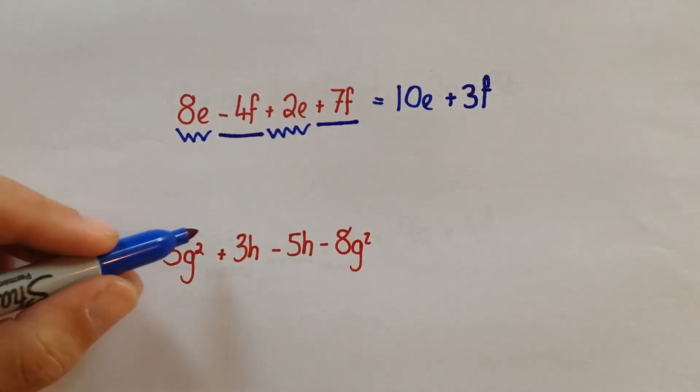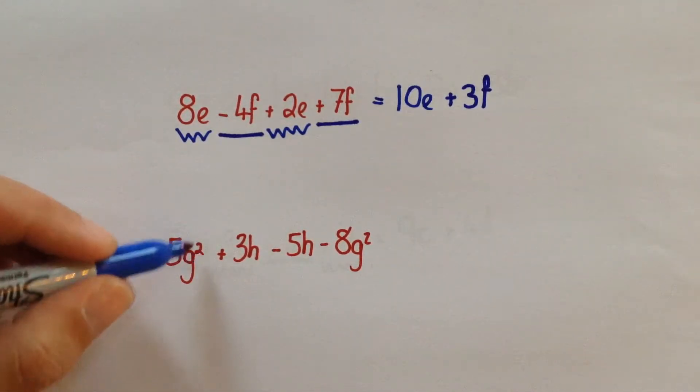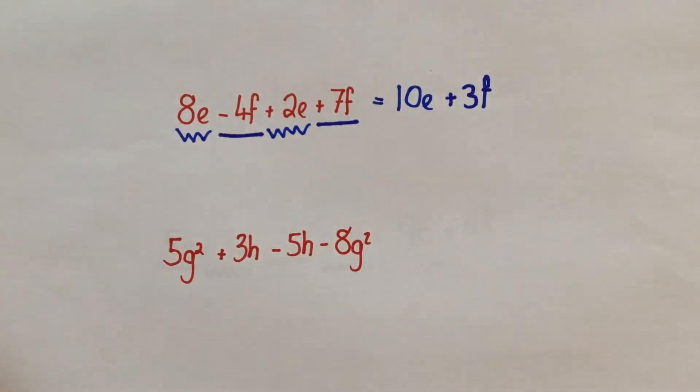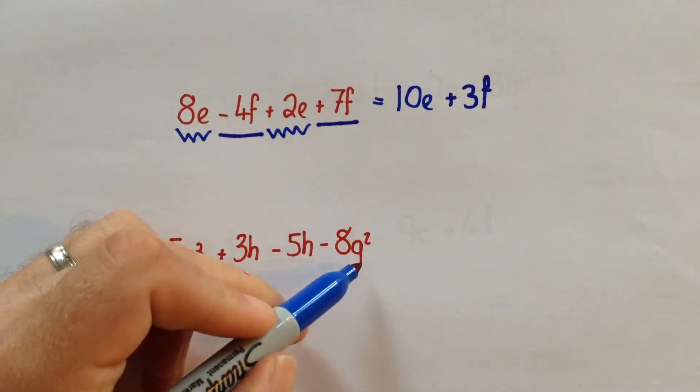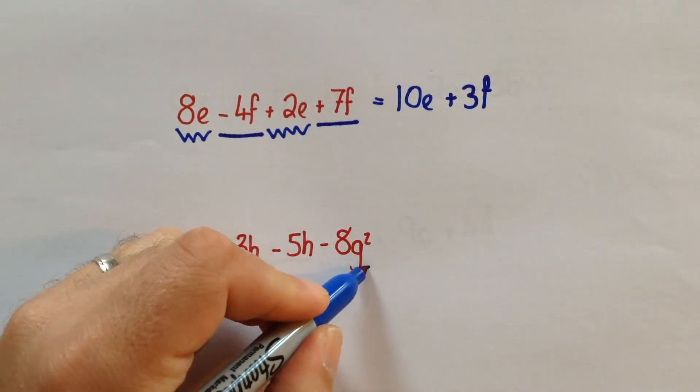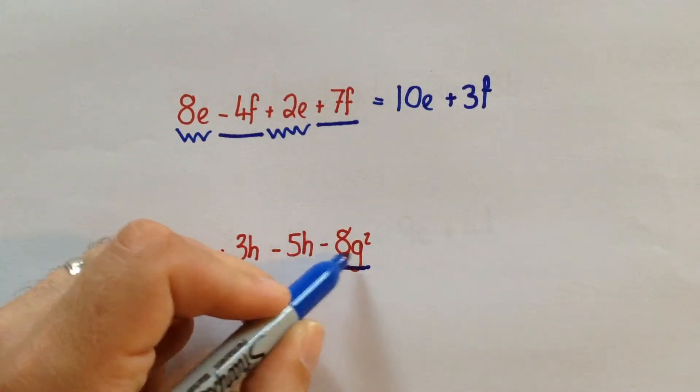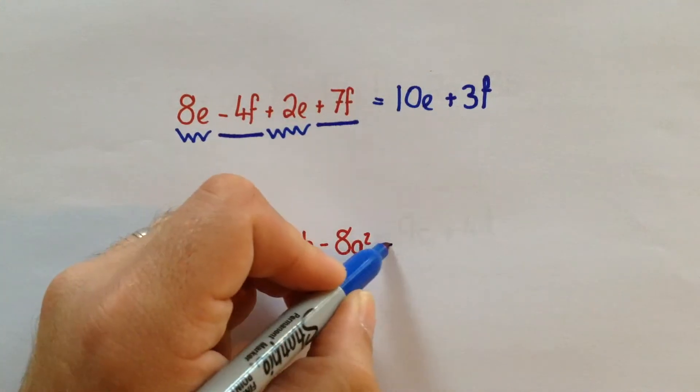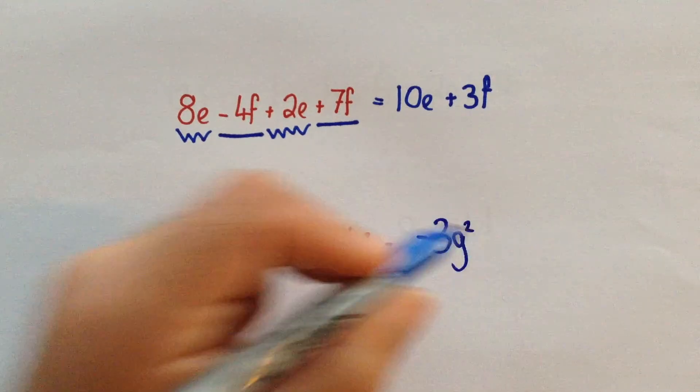For the next example, we've got G squared. Now, this is treated exactly the same. We don't do anything with the powers. We are just collecting together how many G squareds there are. So again, if we use the same idea, 5G squared. And here is the other G squared term. So we are going to do minus 8G squared, because that's the symbol in front of the G squared term. 5 minus 8 would give us minus 3, so it's minus 3G squared.